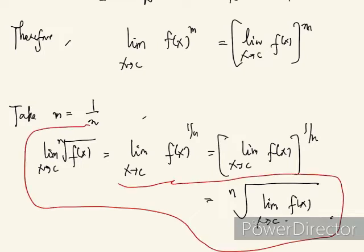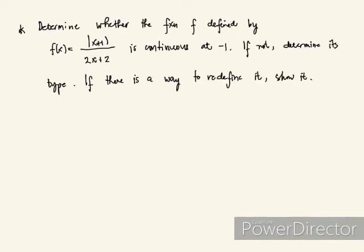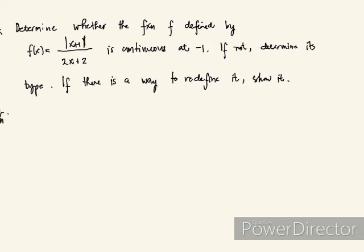So this holds. Determine whether the function f defined by the absolute value of x plus 1 all over 2x plus 2 is continuous at negative 1. If not, determine its type, and if there is a way to redefine it, show it.